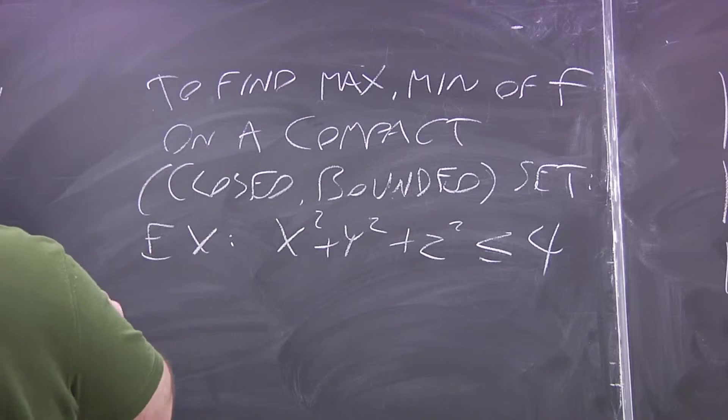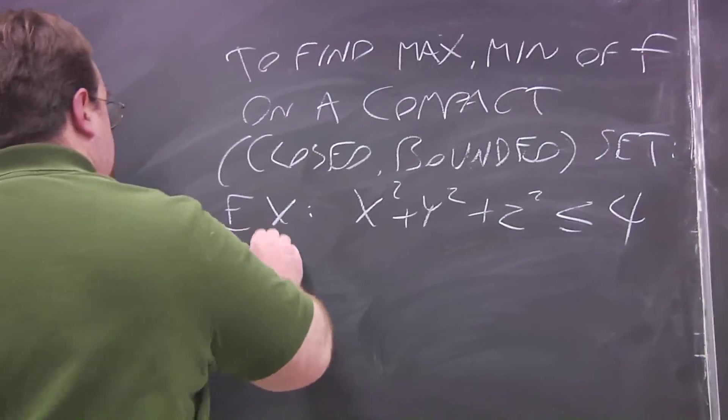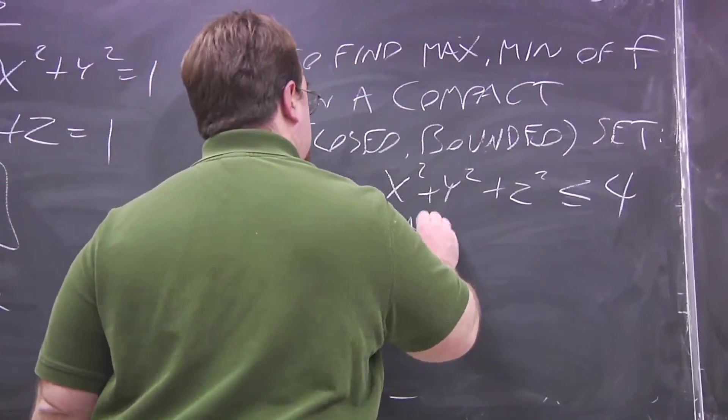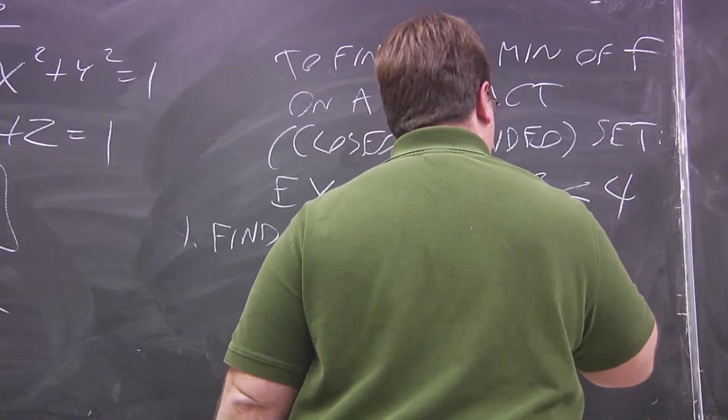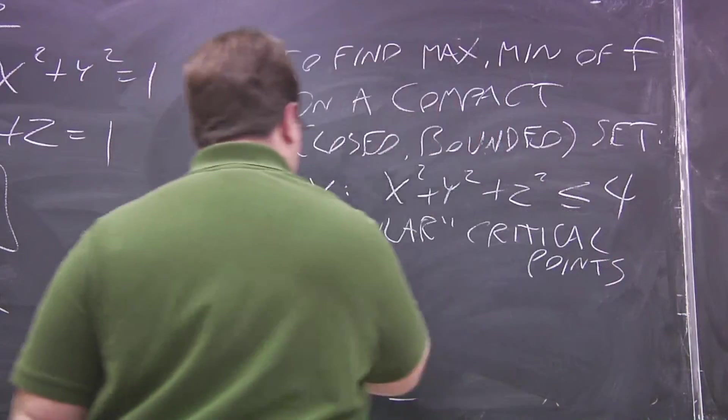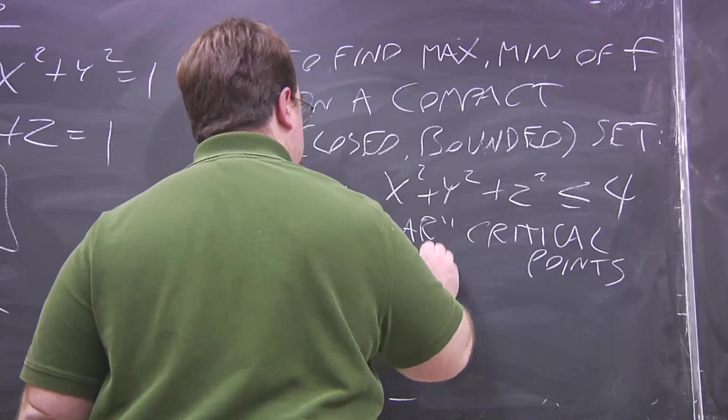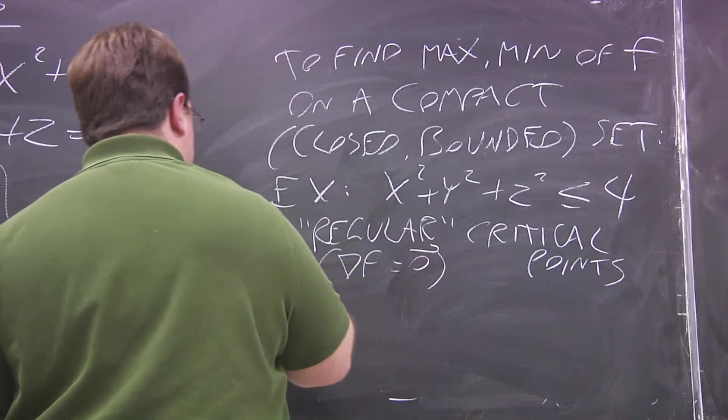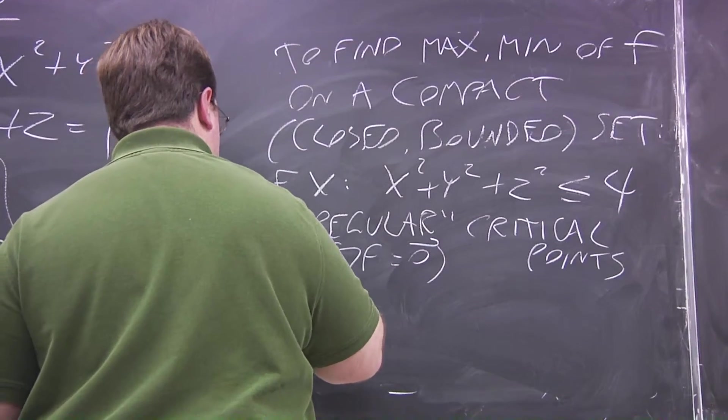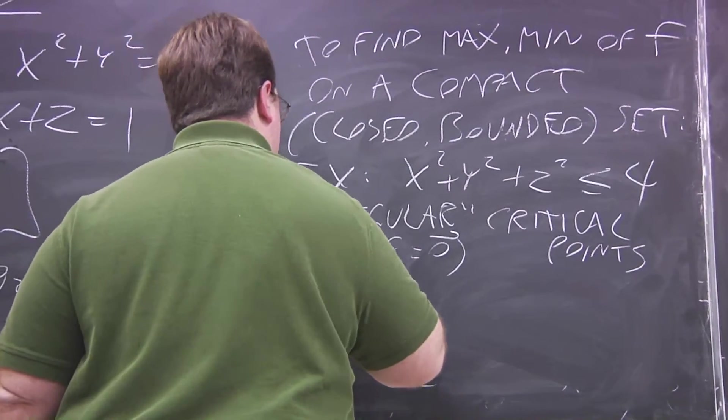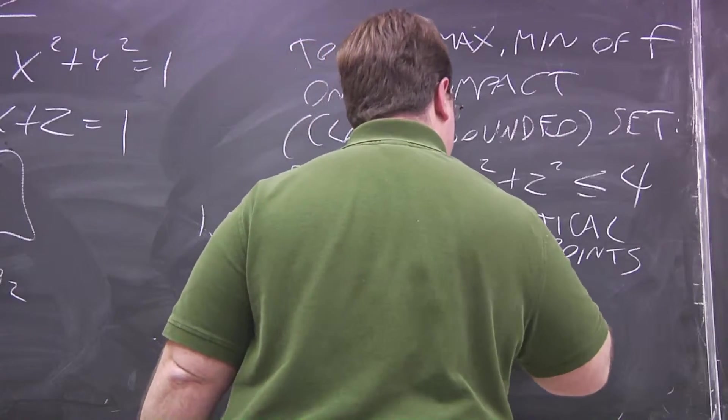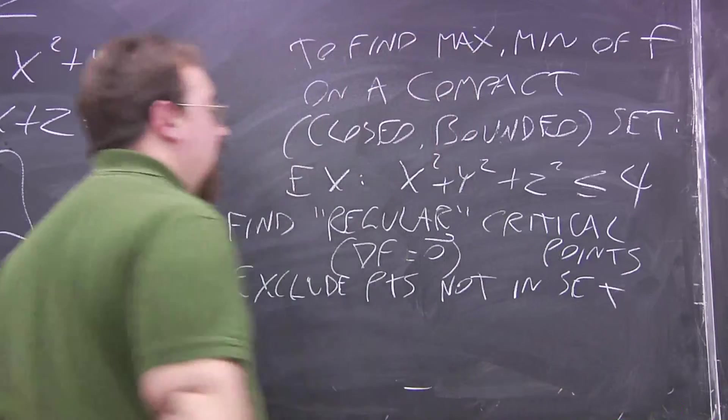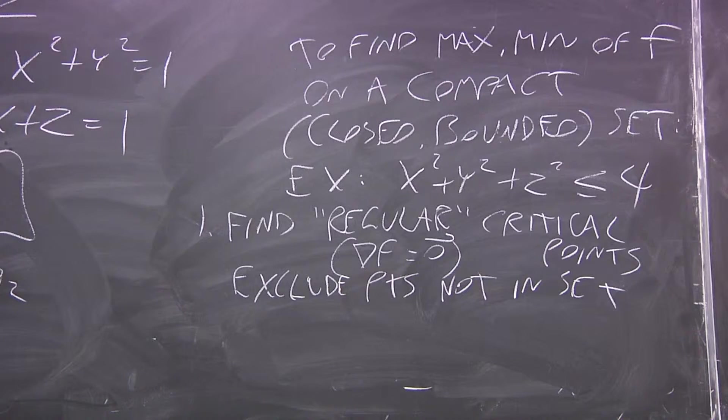Here's what you do: you find regular unconstrained critical points, just like we talked about last time, just where the gradient is equal to zero. And you exclude any critical points that are not in the set at all. If you're totally outside of that ball, just toss them out.